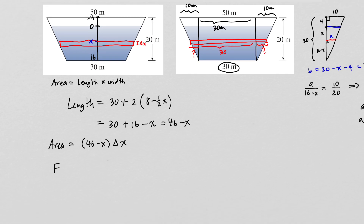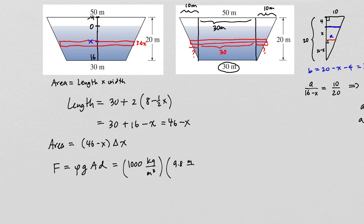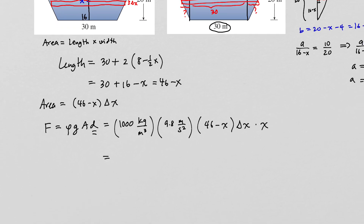The force on that rectangle is rho times g times area times depth. The density of water is 1,000 kg/m³, gravity is 9.8 m/s², the area is (46 − x) delta x, and the depth is x, since we called the water surface zero. Simplifying, the force per slice is 9,800 × x × (46 − x) × delta x.